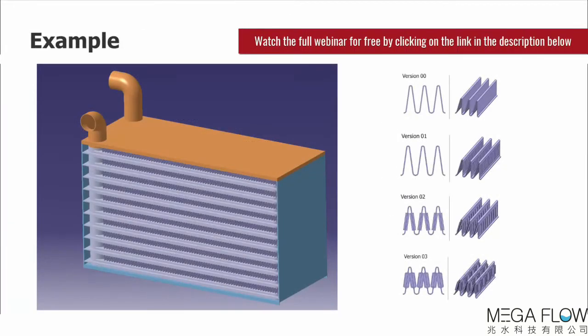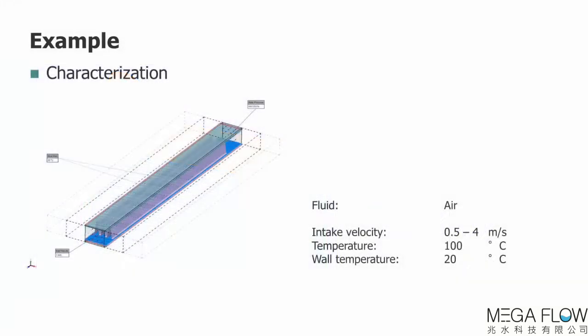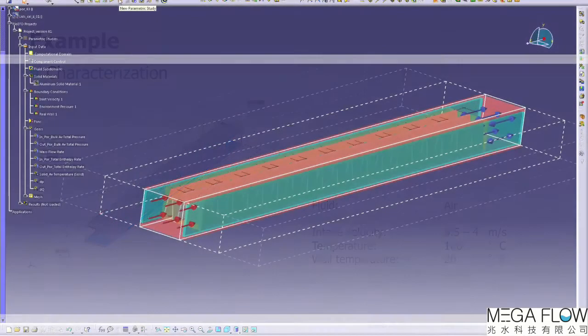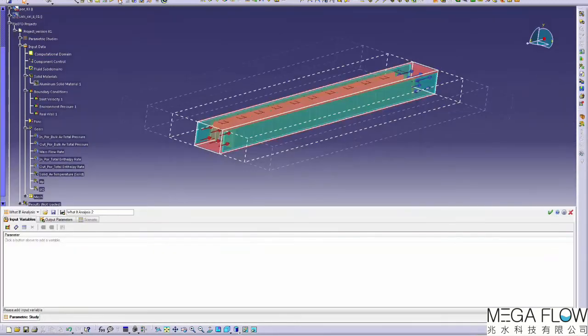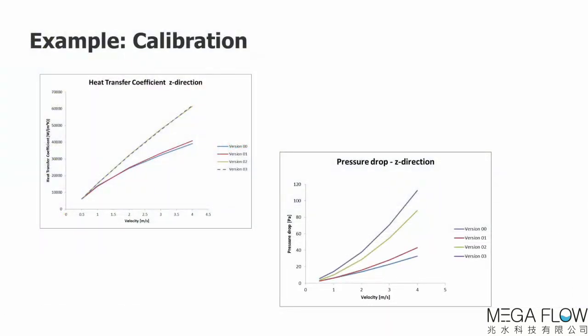Let's consider our example now. Here we have four variations of the fin geometries. The first step is to characterize the examples in terms of pressure drop and heat transfer rate. We use the flow EFD parametric study to run a range of inlet velocities. The results are shown in these charts for the longitudinal direction.